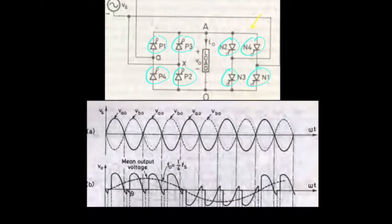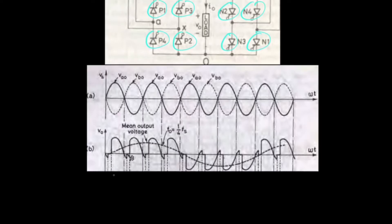The positive group thyristors, when operated, supply the output in the positive half, and when the negative group are operated, they supply the output in the negative half. For the first waveform, P1 and P2 are operated. For the second waveform, P3 and P4 are operated. Then P1 and P2. Then P1 and P3.